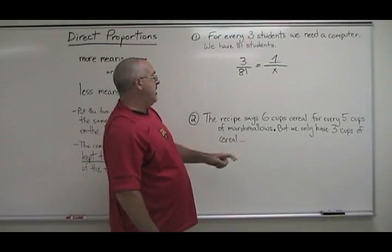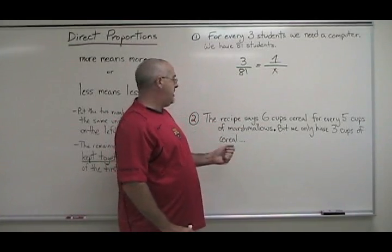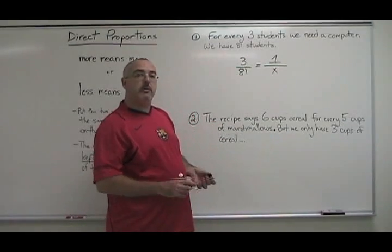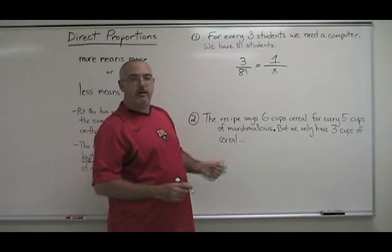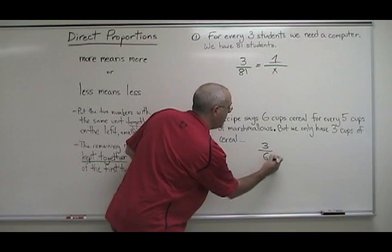Let's do it here. We have six cups cereal, five cups marshmallows, and three cups cereal. The two numbers with the same unit are the six cups of cereal and the three cups of cereal. So we put them together with the smaller one on top.